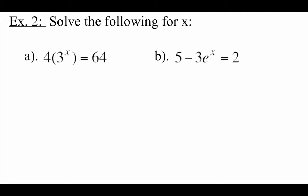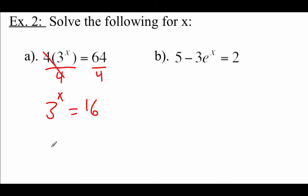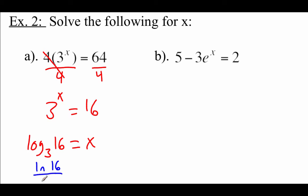The next couple of examples might take a few extra steps, but it's just using some Algebra 1 stuff before we get into the actual logarithmic or exponential work. In part a we've got 4 times 3 to the x equals 64. First, divide both sides by 4 to get 3 to the x equals 16. Then rewrite in logarithmic form: log base 3 of 16 equals x. Using the change of base formula with natural logs: natural log of 16 divided by natural log of 3 gives about 2.524.